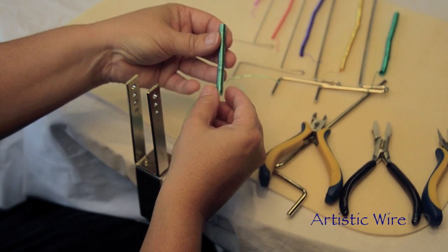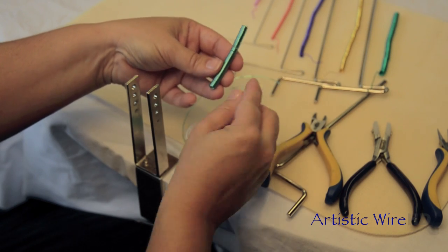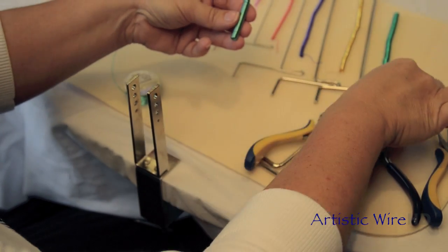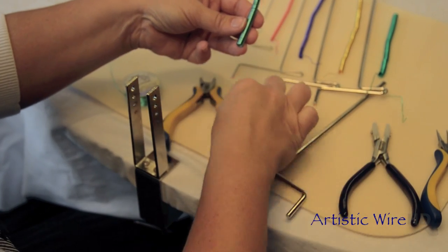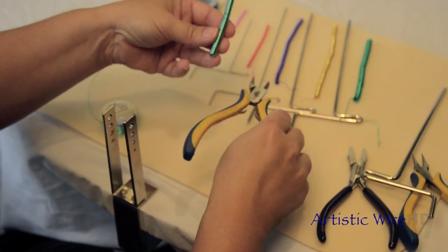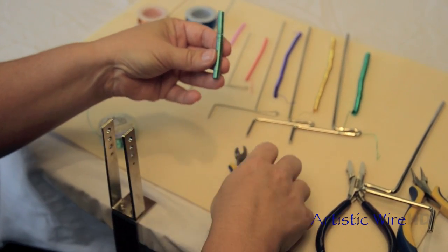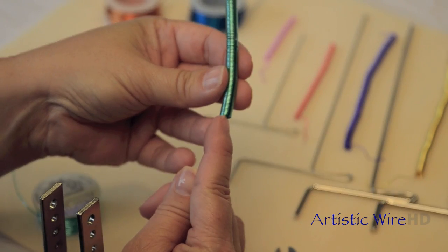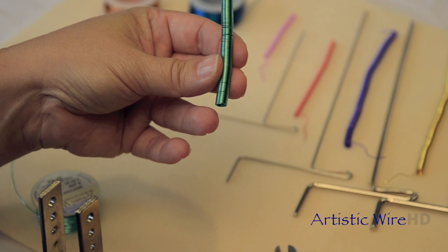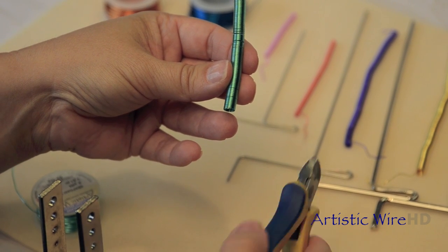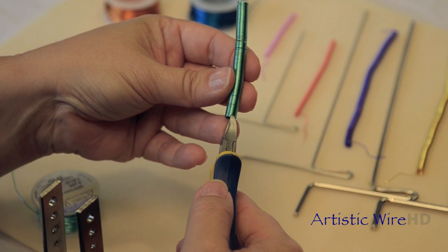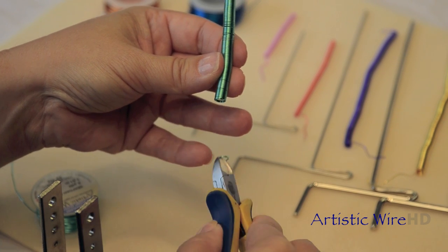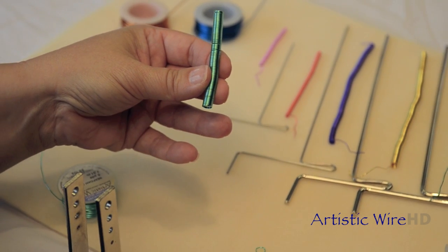And remember how I mentioned you can use these for coordinating jump rings? Well, let me show you really quick how to do that because I really think that this is a fun technique. I'm just going to find the end of that cut. I can feel it with my finger now. Then I'm going to take my wire cutter and very carefully right there. Oh my goodness, look at how cool we have a jump ring.